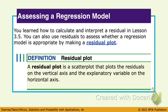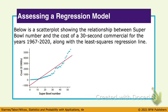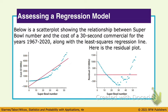A residual plot is a scatter plot that plots the residuals on the vertical axis and the explanatory variable on the horizontal axis. Think about just taking the line and flattening it — that is the residual plot. All we're doing is looking at the distance that each dot is from the line and putting it on that scatter plot.